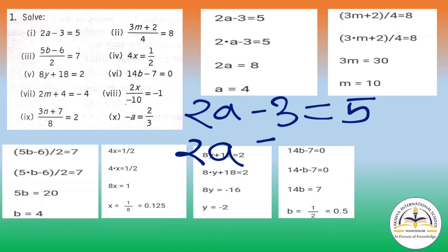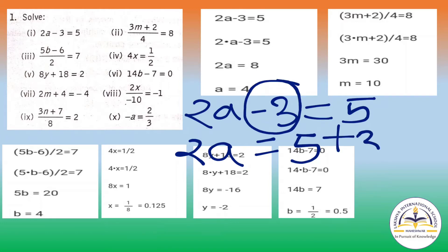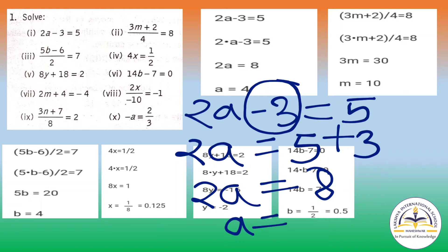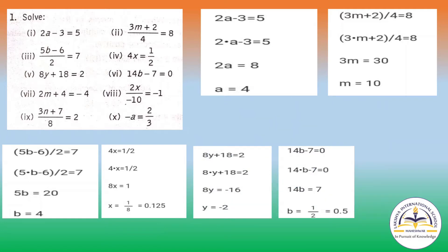When you transfer minus 3 to the RHS, it is of negative sign so it will become positive. So 2a equals to 5 plus 3, you will get 8. Now 2a equals to 8, so these two will divide: 8 by 2. When you divide 8 by 2 you will get 4, that is the value of a.